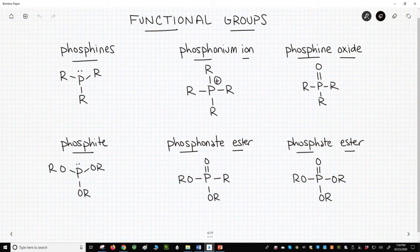The simplest is phosphorus attached to three R groups. These are phosphenes.